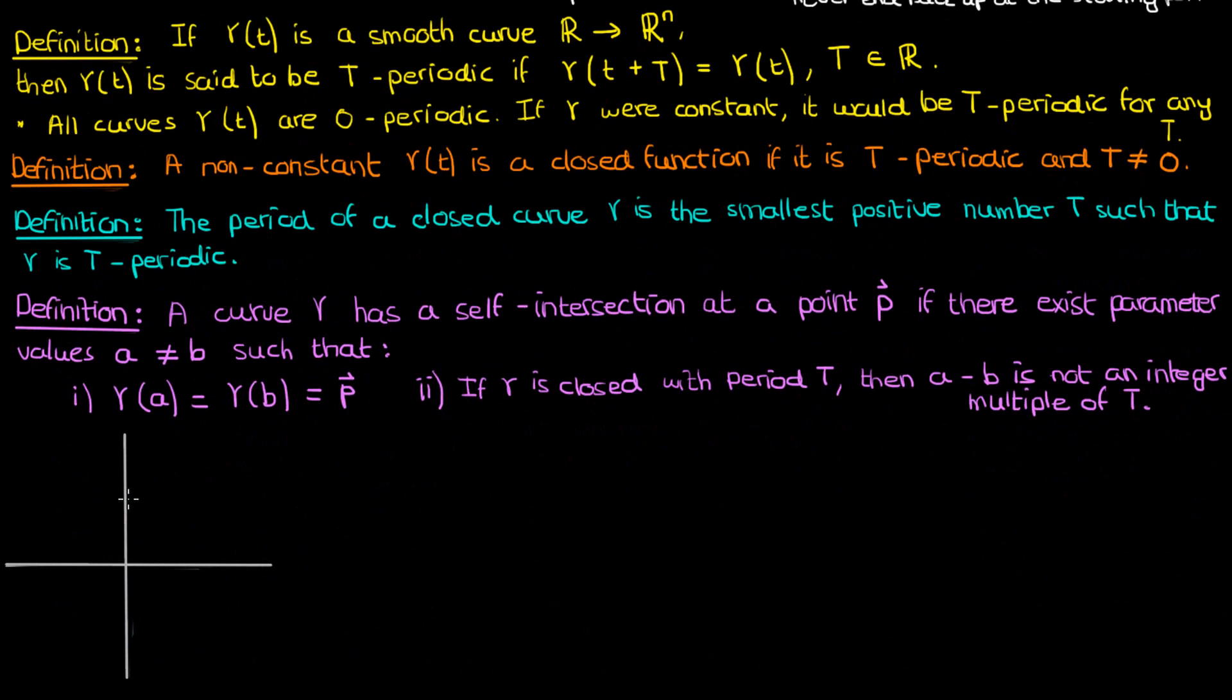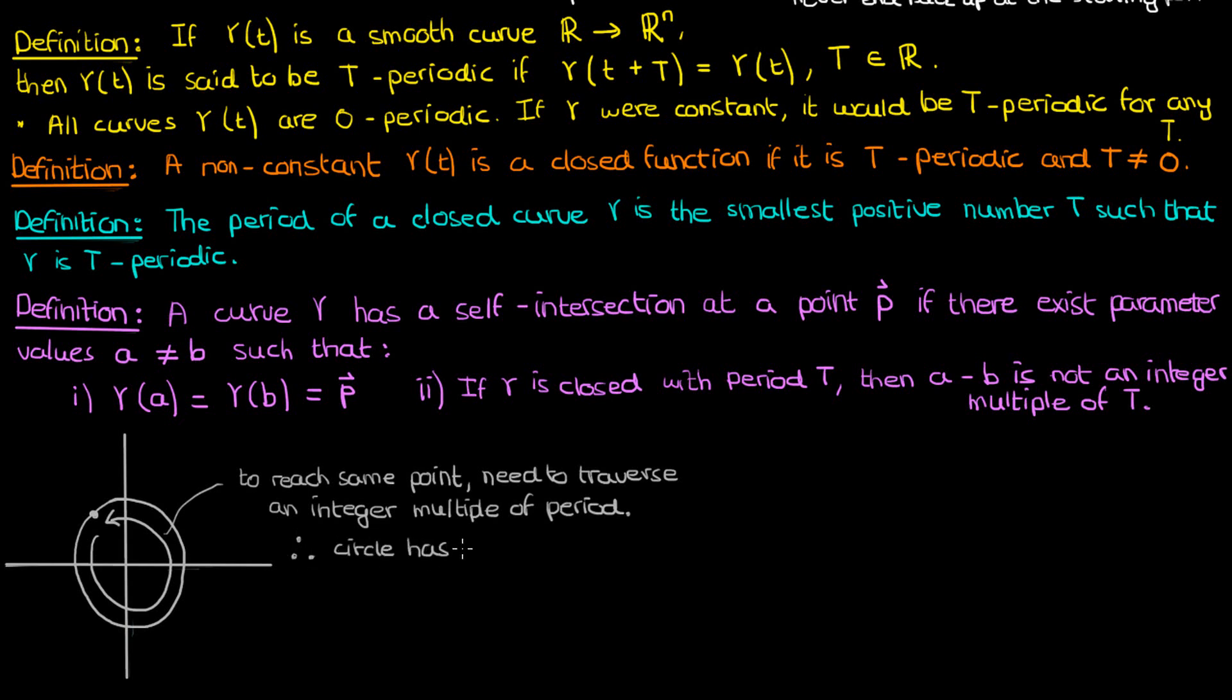If my gamma happened to be a circle, then it wouldn't have any self-intersections by this definition, because in order for us to reach the same point on the circle, we would have to traverse an integer multiple of the circle's period. By the second condition on the definition, we cannot traverse an integer multiple of a period for a point to be a self-intersection. The self-intersection must occur outside of the curve's periodicity. Therefore, a circle, even though it's periodic, has no self-intersections.